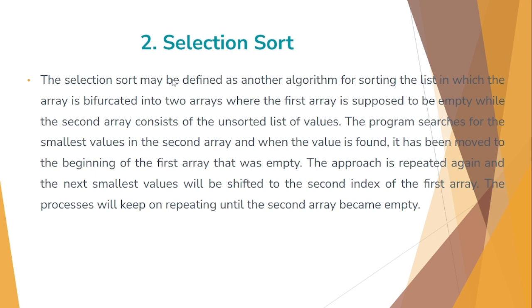The selection sort may be defined as another algorithm for sorting the list in which the array is bifurcated into two arrays where the first array is supposed to be empty while the second array consists of an unsorted list of values. The first array will be empty. The second array will be unsorted.